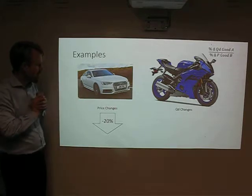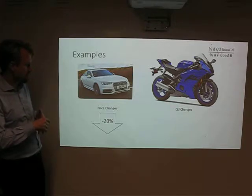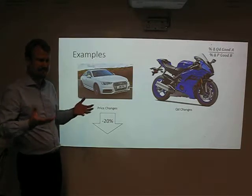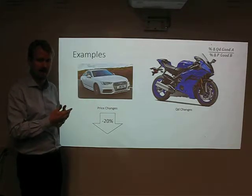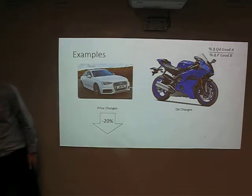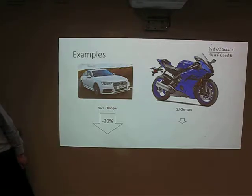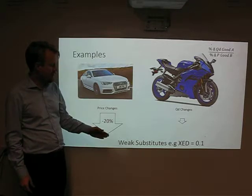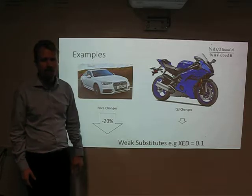Next up: cars and motorcycles. If the price of cars goes down by 20%, fewer people are going to want to buy motorcycles. But are they really in the same market? Is everybody dropping a motorcycle going to be tempted to buy a car? Doubtful. So I would say it's a less than proportional change in quantity demanded for motorcycles — therefore an inelastic relationship, meaning weak substitutes — with an elasticity value of something like 0.1.